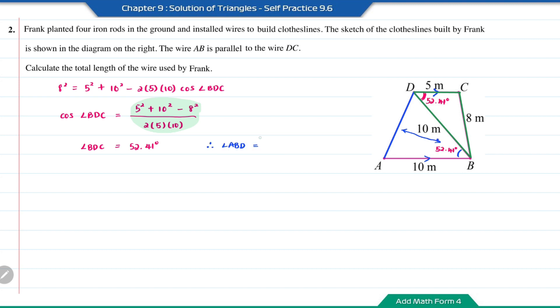Then the angle ABD will be equal to 52.41 degrees as well. So now we can find the length AD using the cosine rule. So it will be AD square equal to 10 square plus 10 square minus 2 times 10 times 10 cos 52.41. So the length AD will be the square root of the answer here, which is equal to 8.832.